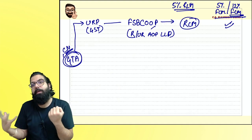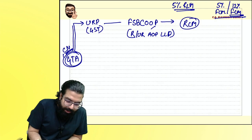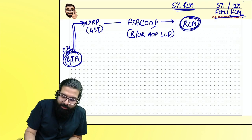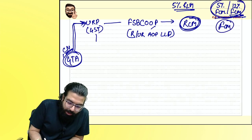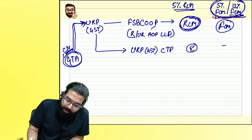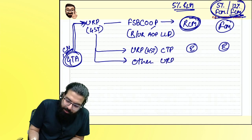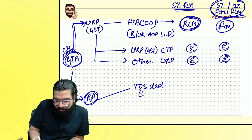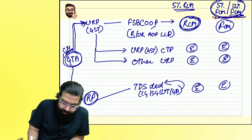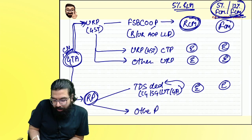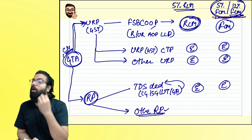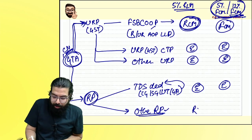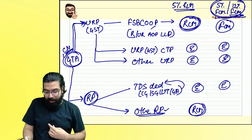If GTA is providing services to an unregistered person who is a casual taxable person, it may be exempt. For a registered person who is a TDS deductor — central government, state government, or governmental authority registered as TDS deductor — it is also exempt. But if the registered person is another regular taxpayer, CTP, NRTP, or composition dealer, RCM applies.